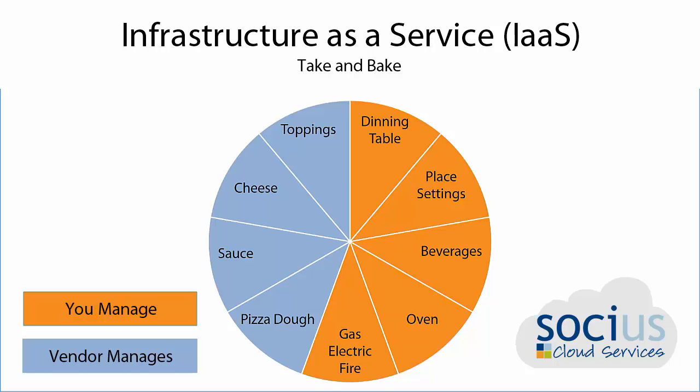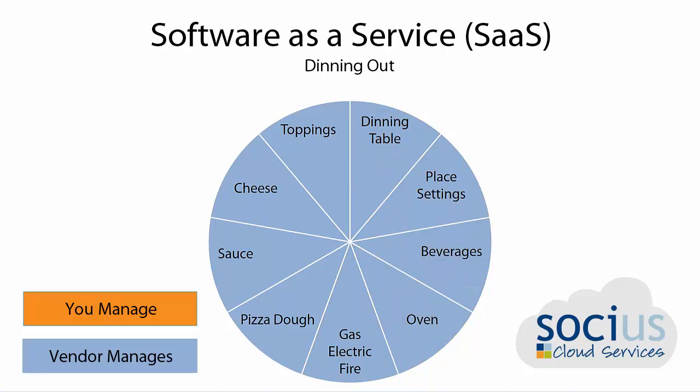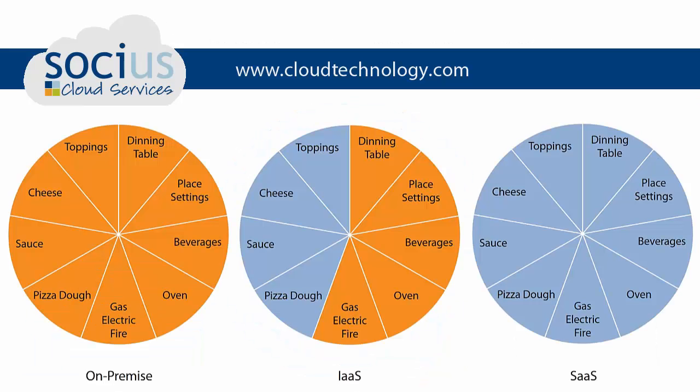So it's a blend of both. Software as a service is the entire outsourcing of the package — like dining out for pizza. The restaurant provides the dining table, the drinks, the ovens, and all the different components necessary to make that pizza. When you start thinking about cloud solutions, I encourage you to keep that pizza analogy in mind.